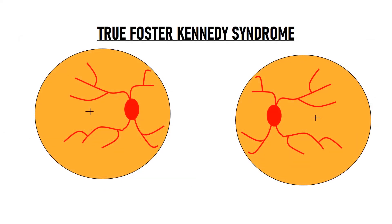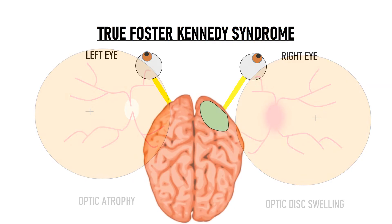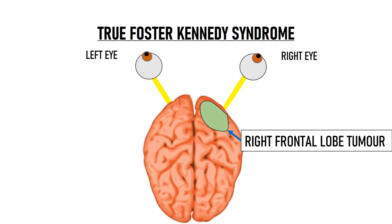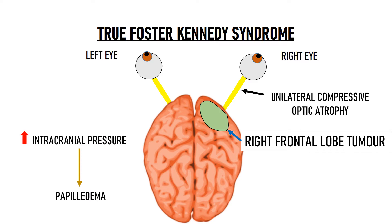In true Foster Kennedy syndrome, the patient has optic atrophy in one eye and optic disc edema in the other eye. These patients have a frontal lobe tumor and that tumor presses on the optic nerve on the same side to cause compressive optic atrophy. Sometimes this tumor is quite large and that causes increase in intracranial pressure, which causes papilledema leading to optic disc swelling in the opposite eye.